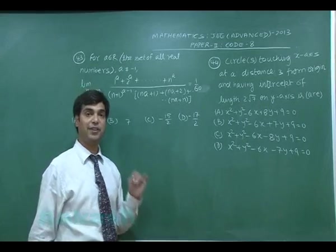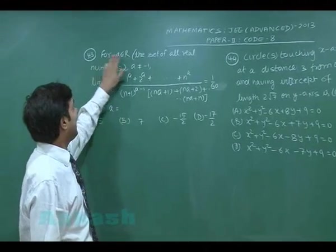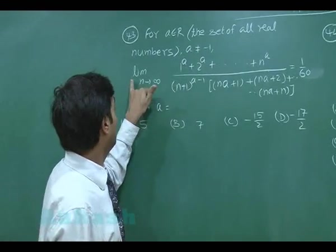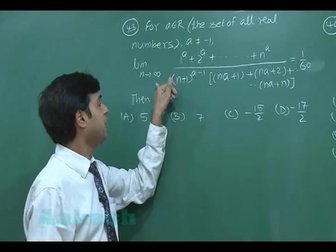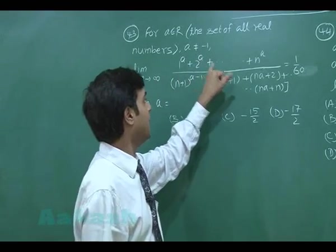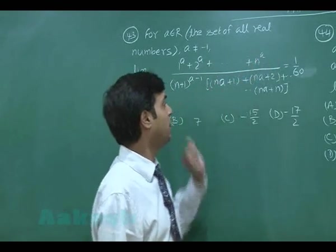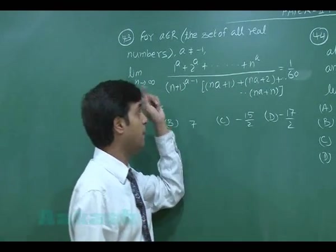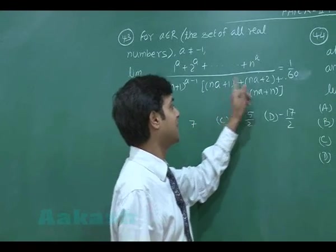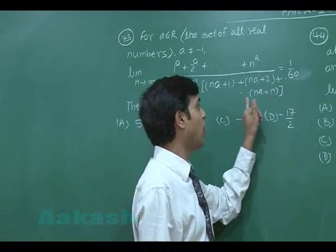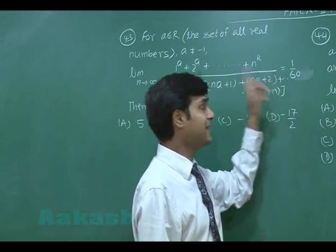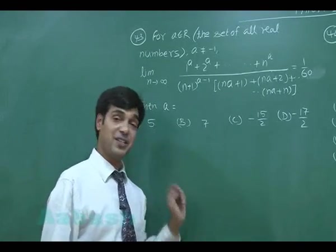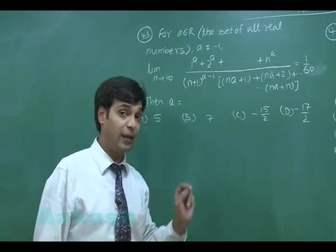Let us talk about question number 43. For a from the set of real numbers where a is not equal to minus 1, the limit as n approaches infinity of (1 to the power a plus 2 to the power a plus up to n to the power a), whole divided by (n plus 1) to the power (a minus 1), multiplied with (n·a plus 1 plus n·a plus 2 plus up to n·a plus n), is equal to 1 by 60. We need to find the value of a.